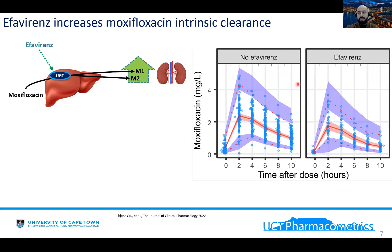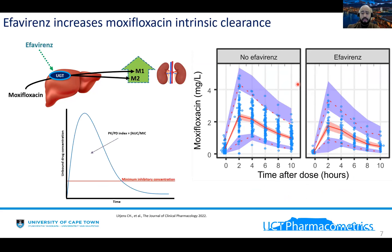To evaluate the probability of target attainment, there is a target we aim to reach for moxifloxacin. As a fluoroquinolone, the PK/PD index well accepted for evaluating efficacy is the area under the free concentration curve divided by the minimum inhibitory concentration (AUC/MIC). The most accepted value for this PK/PD index is 53, which comes from in vitro data.